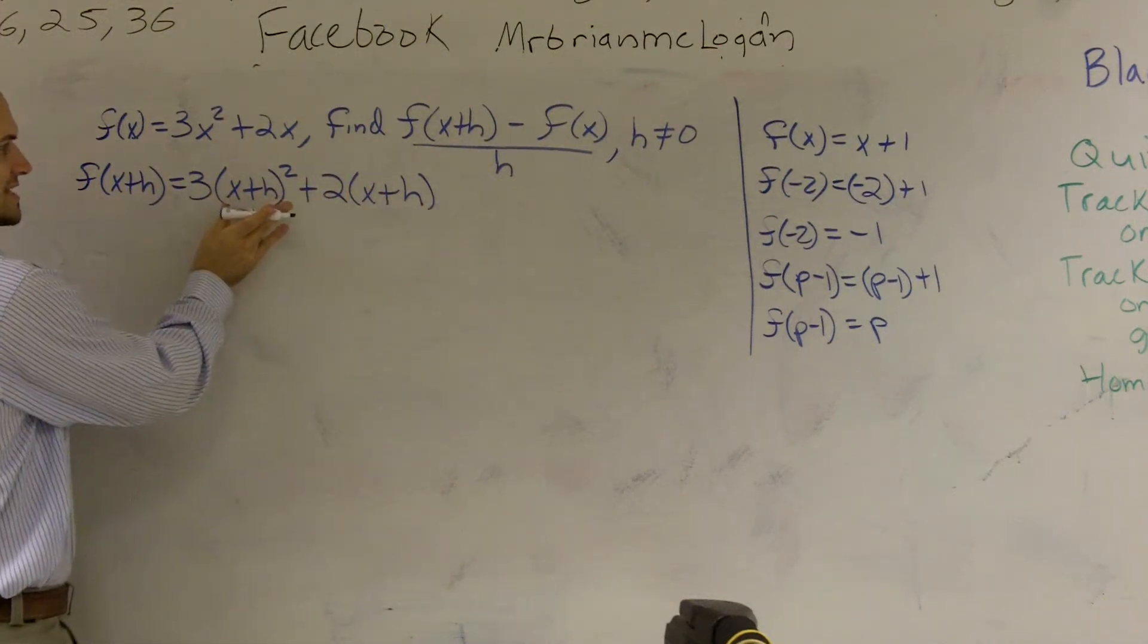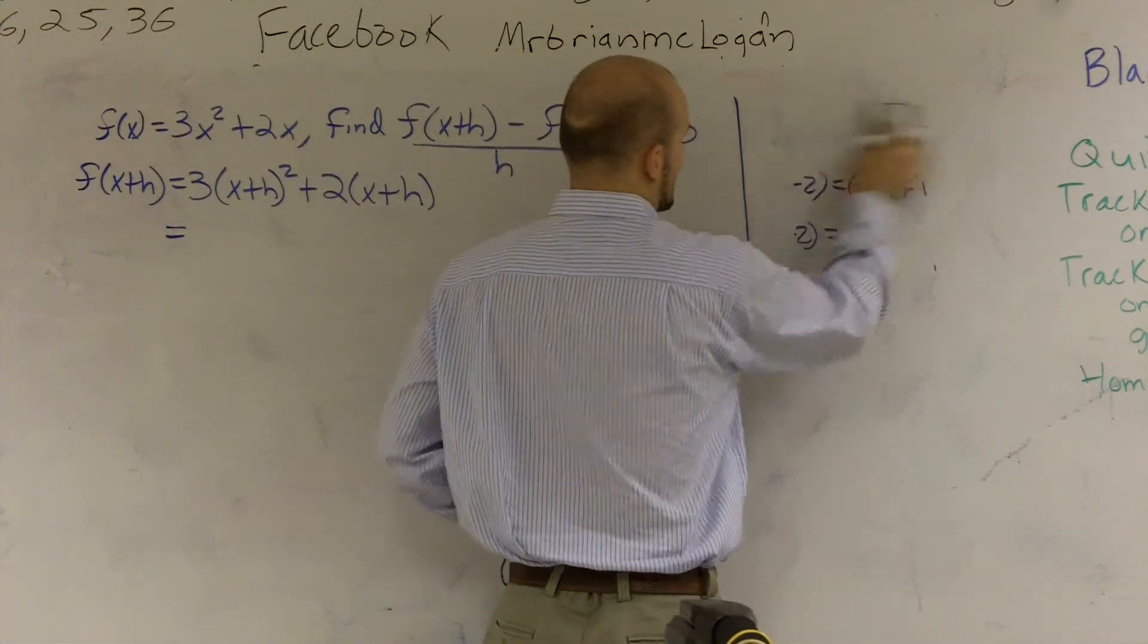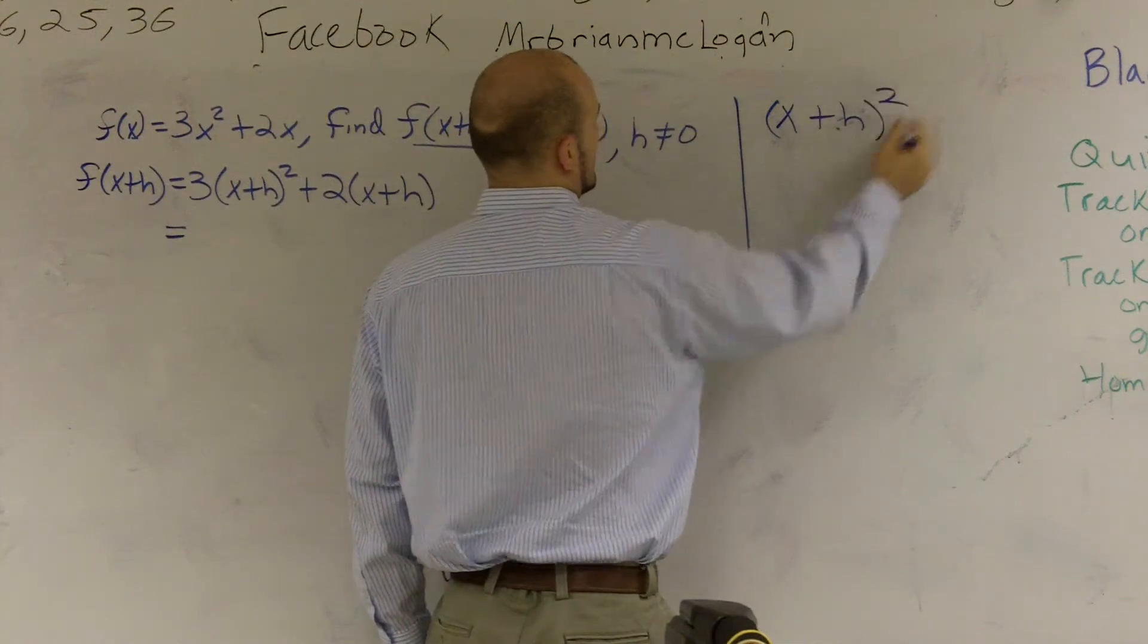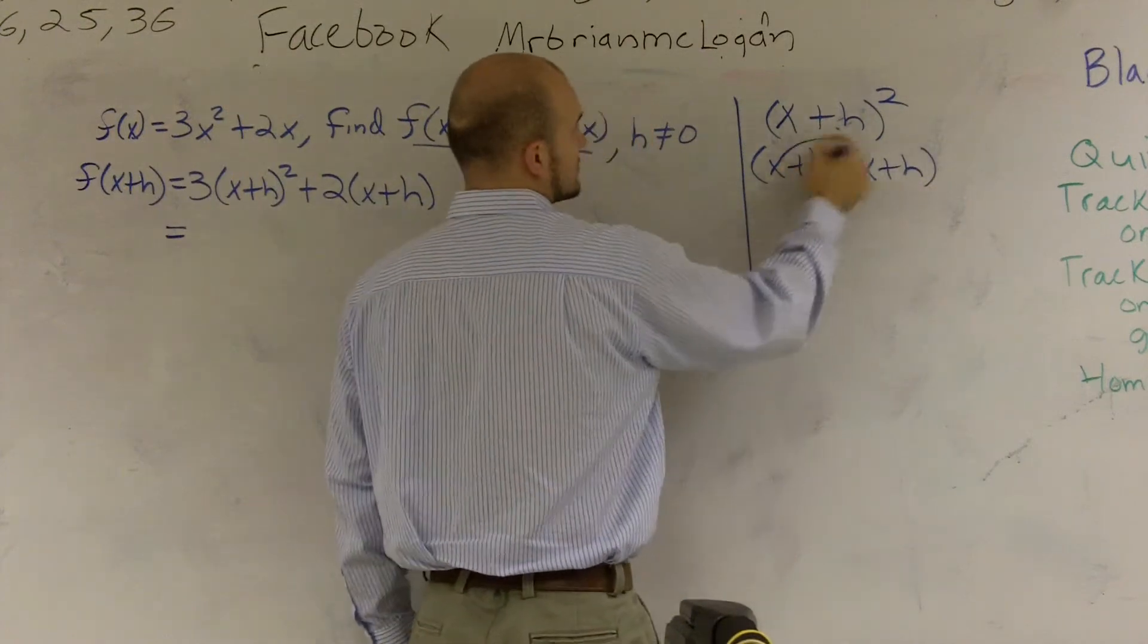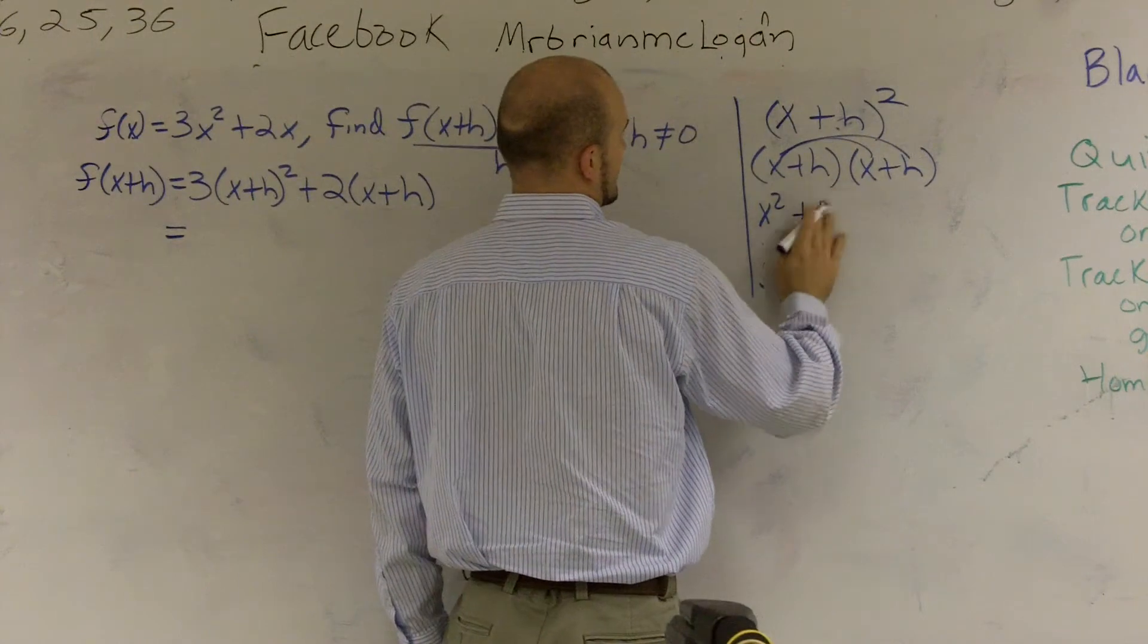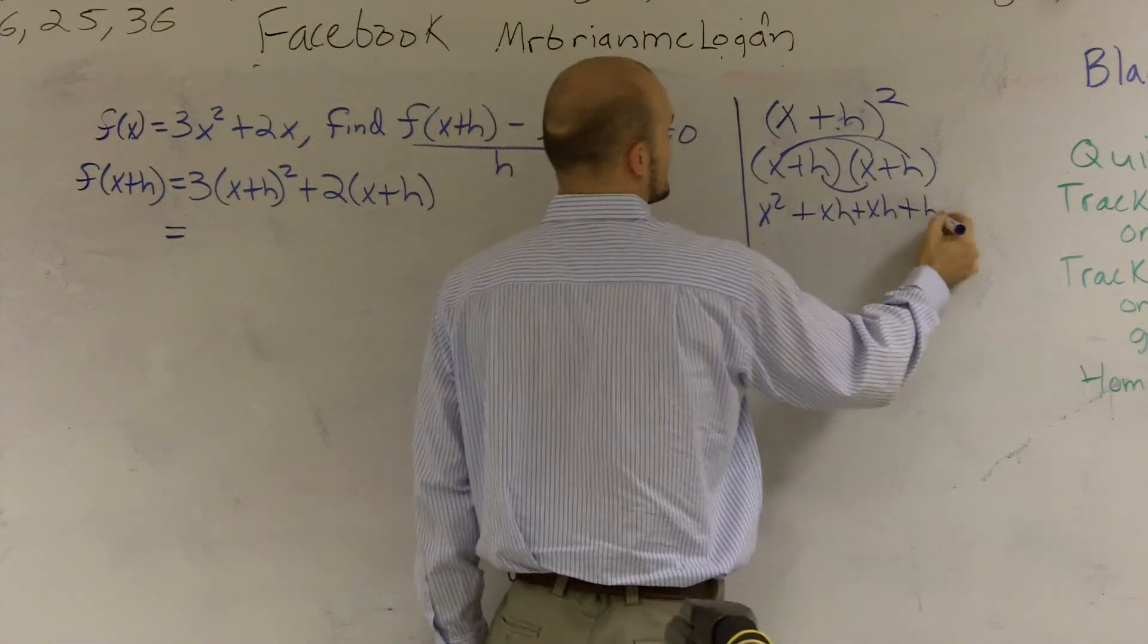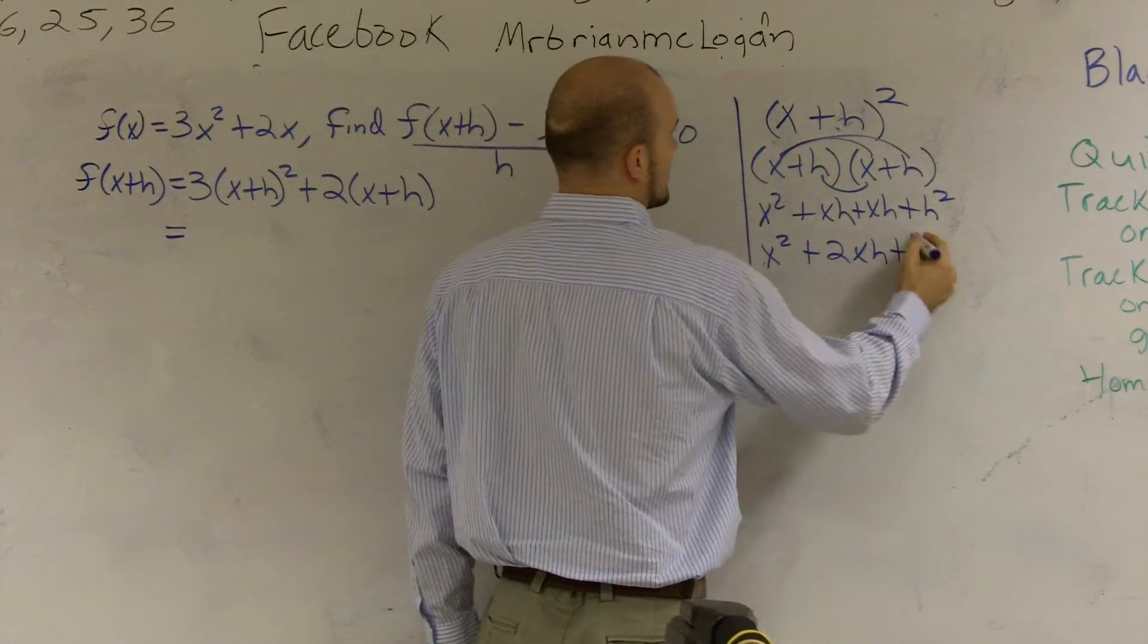Then I need to figure out what $(x + h)^2$ is. So I'm going to erase this. I'm just going to put it on as kind of like a side point, just in case people forget how to do $(x + h)^2$. Do your FOIL. $x$ times $x$ is $x^2$ plus $xh$ plus $xh$—I know it's $h$ times $x$, but you can write it either way—plus $h^2$, so $x^2 + 2xh + h^2$.